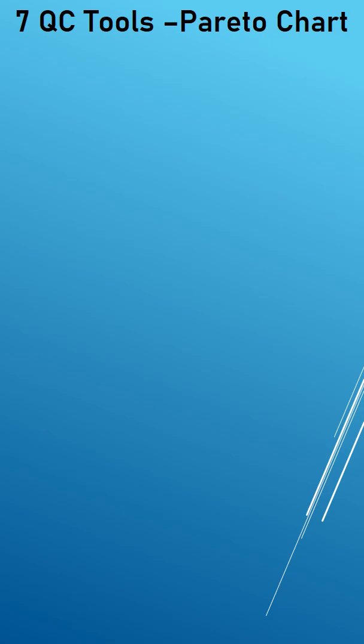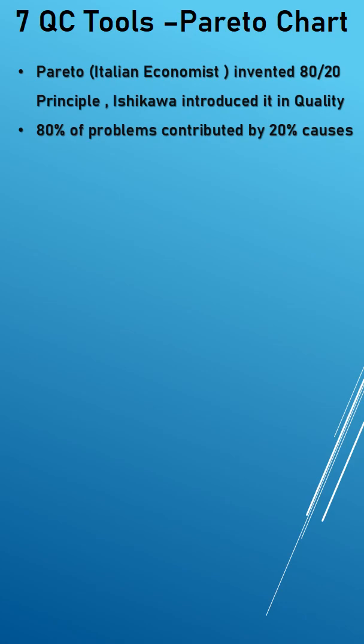Pareto chart is a very famous tool among the 7 QC tools. It is a Pareto, an Italian economist, who found out that 80% of money in the world is lying with 20% of people.